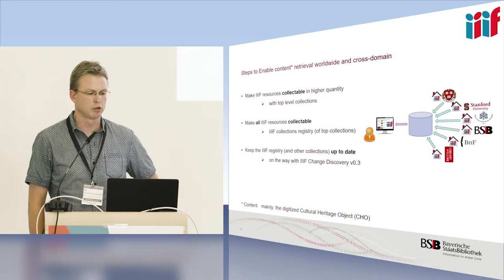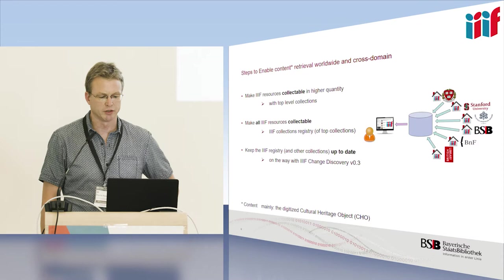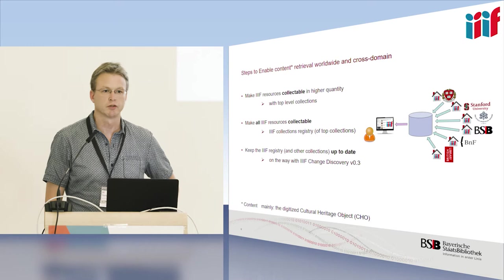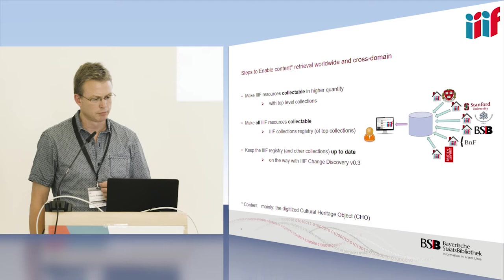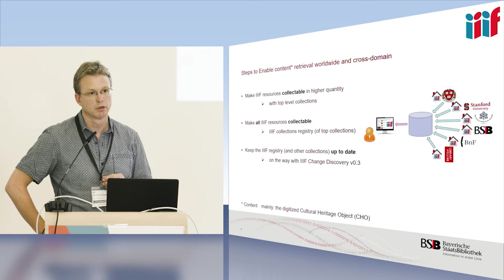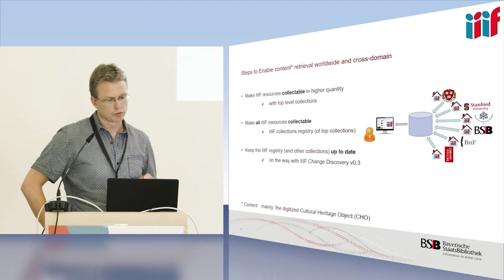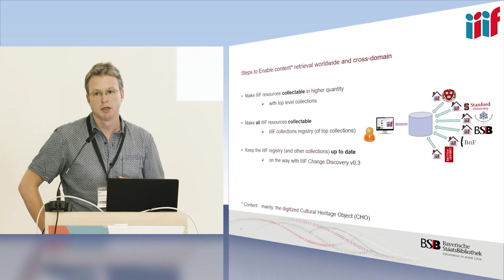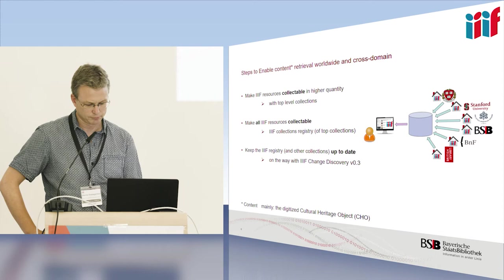So where we are — what steps do we have to take to enable content retrieval worldwide and cross-domain? One step is to make IIIF resources collectible in higher quantity, and this goes mostly with top-level collections. One institution forms a top-level collection and you can get all their objects from this one point. It would be a good idea to build a registry of all top collections, giving you one point where you can get all registered IIIF content. Keeping the registry and other collections of manifest objects up to date is on the way with the IIIF Change Discovery API version 0.3.